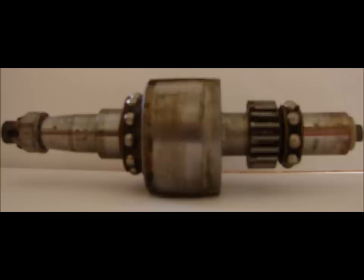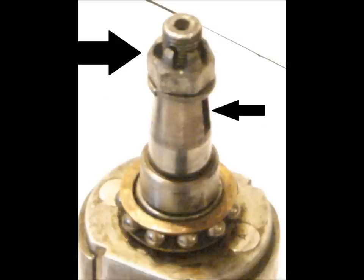The rotor is the largest component of the magneto. The rotor is divided into several sections. The drive end of the rotor is threaded and made to accept an impulse coupling. The impulse coupling is locked into place using a woodruff key and a castellated nut.